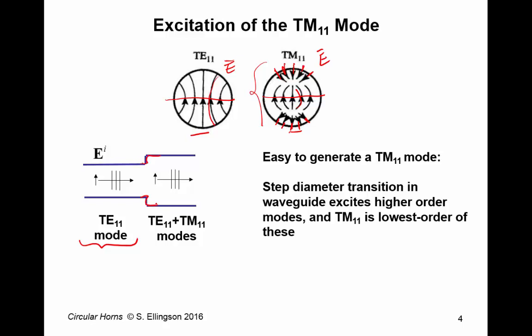By increasing the diameter of the waveguide, you do two things. First of all, you make this dimension large enough so that you can support a higher-order mode, and there's TM-1-1.